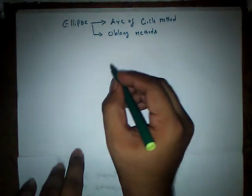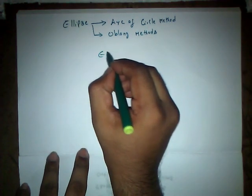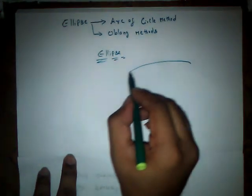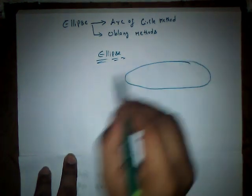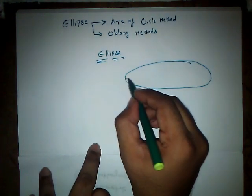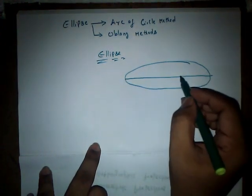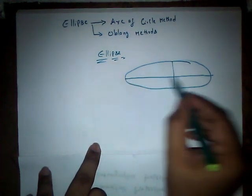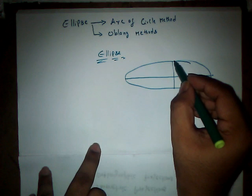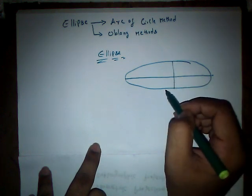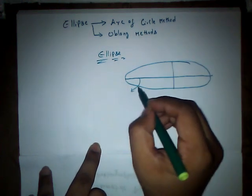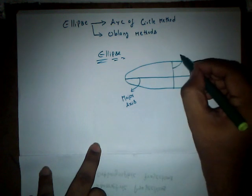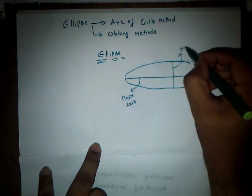Before moving into the methods, let us know something about Ellipse. Generally the elliptical shapes are going to be in this format. This is an Ellipse. And generally an Ellipse has two important axes - one is a larger one and another one is a shorter one. This larger horizontal axis is the major axis, and this vertical smaller axis is the minor axis.